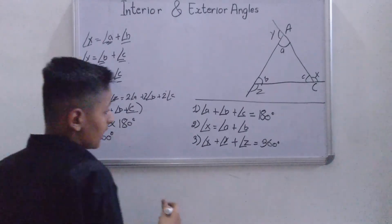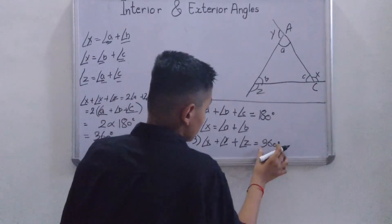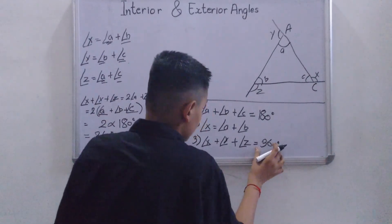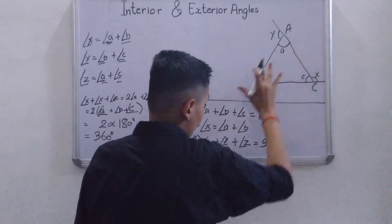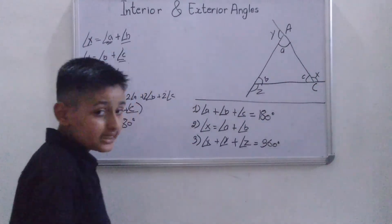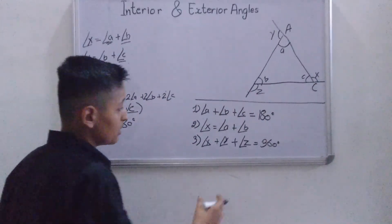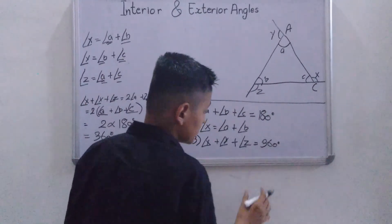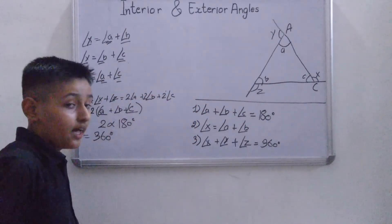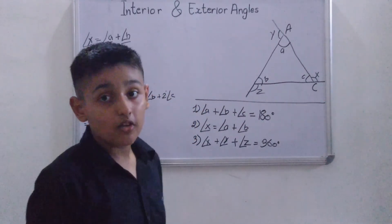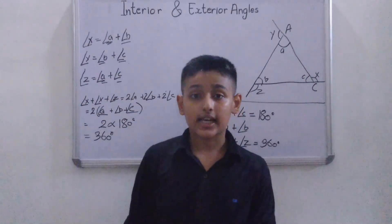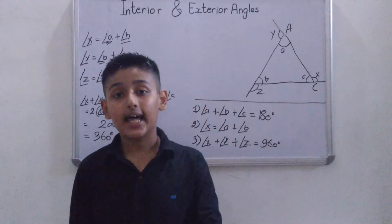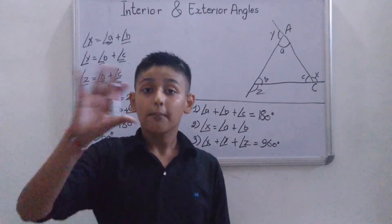Friends, this is how we prove that the sum of all the exterior angles is equal to 360 degrees. Thank you — please do not forget to subscribe to my channel and like and share my video.